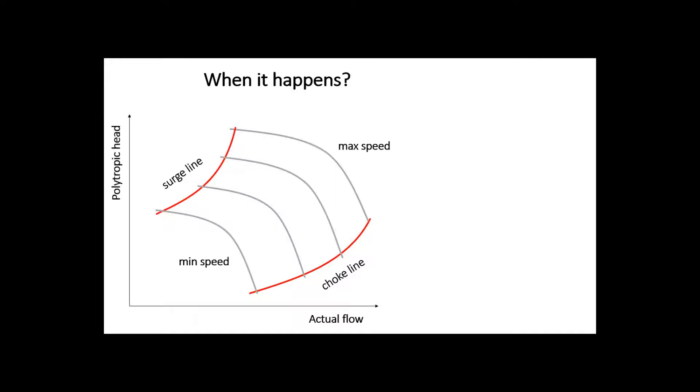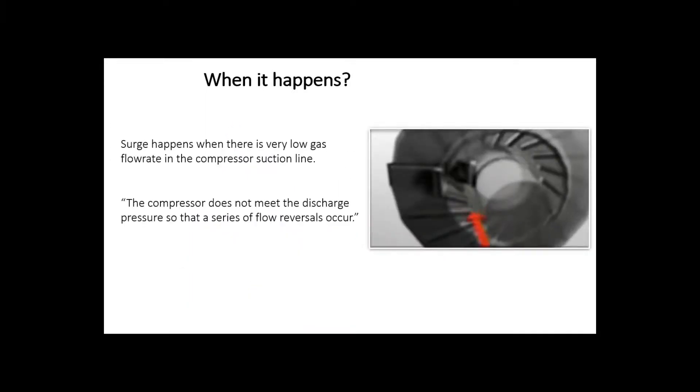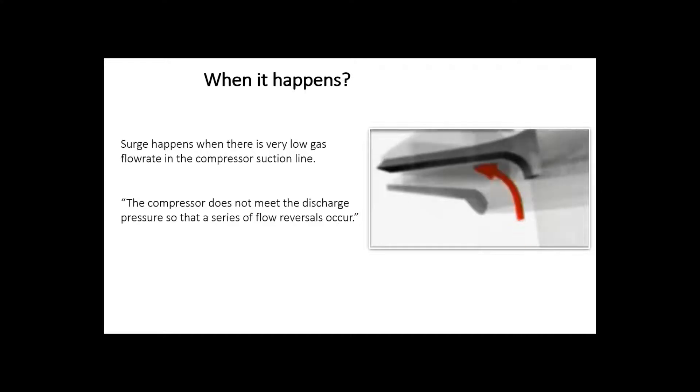The surge point indicates the minimum capacity that the compressor is able to deliver stable operation. This is actually the minimum theoretically operable point of the flow rate, but we always take some margin. The unstable operation, the surge cycle, starts when we fall behind this surge line.